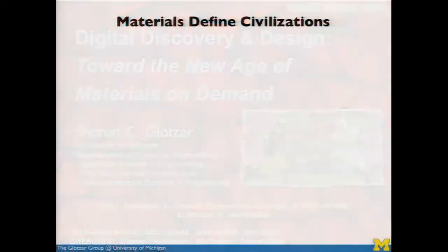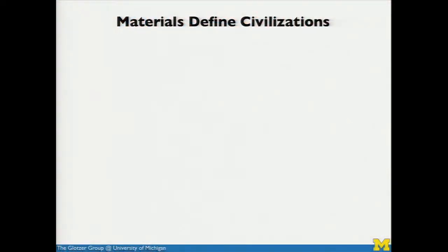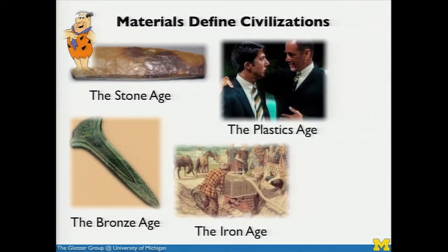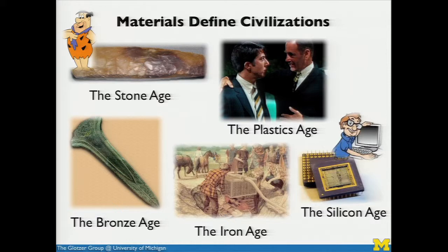It is often said that materials define civilizations — from the Stone Age to the Bronze Age to the Iron Age, the plastic age, and the silicon age. The materials that we have at our fingertips define what we're able to do as a civilization, and even serve to define our aspirations for where we want our civilization to go.